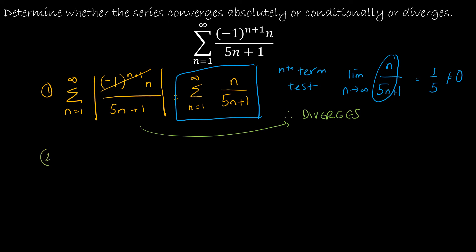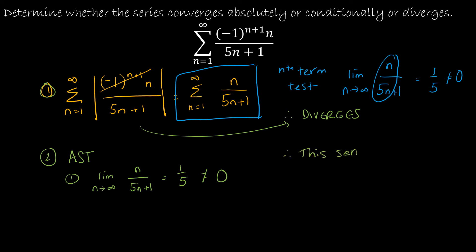That means we move on to step 2. But if I apply the alternating series test, the first requirement is that the limit as n approaches infinity of a sub n — which is n over 5n plus 1 — must equal 0. We just determined it's 1/5, which is not 0. So not only does the absolute value function diverge, but the original function diverges as well. Therefore, this series diverges by the nth term test.